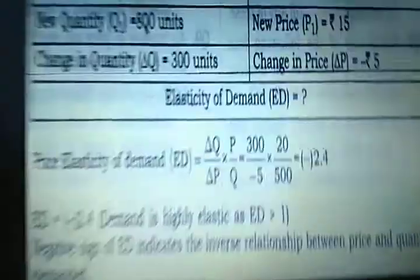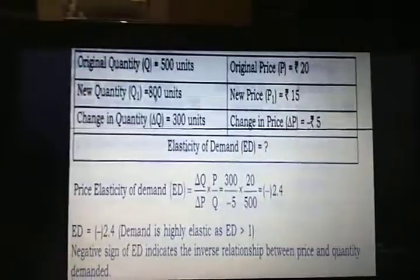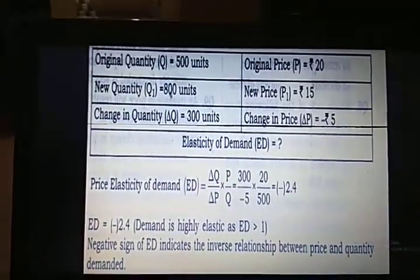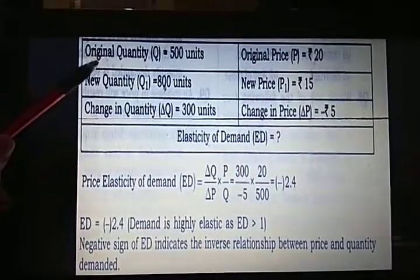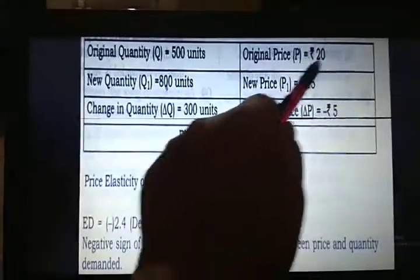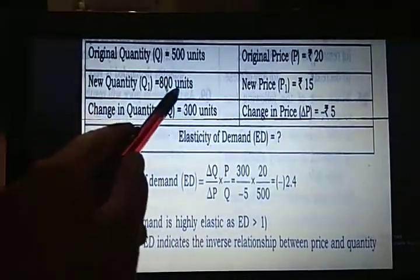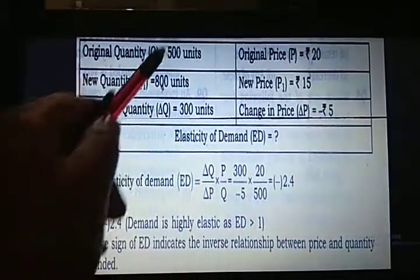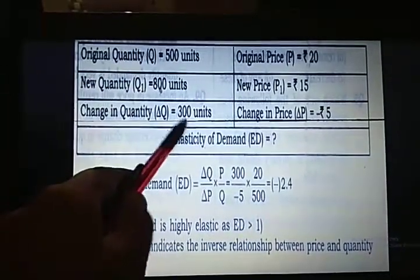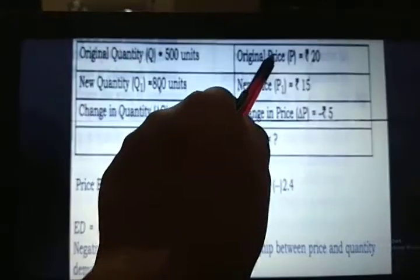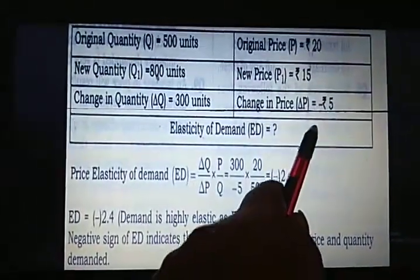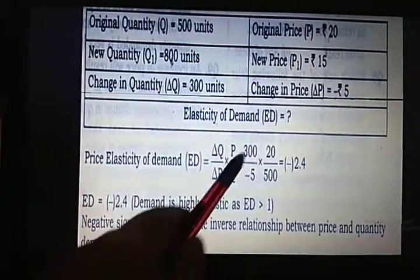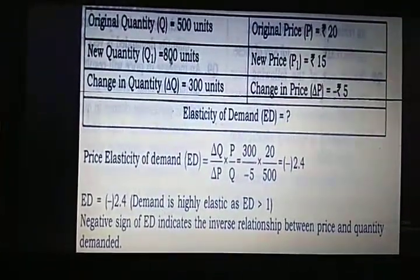Another question: calculate the elasticity of demand given original demand is 500 units, original price P is 20, new demand Q1 is 800 units, and P1 is 15. Change in demand delta Q is Q1 minus Q, which is 800 minus 500, equal to 300 units. Change in price delta P is P1 minus P, which is 15 minus 20, equal to minus 5. Using the formula delta Q upon delta P into P by Q, we get the answer as minus 2.4.